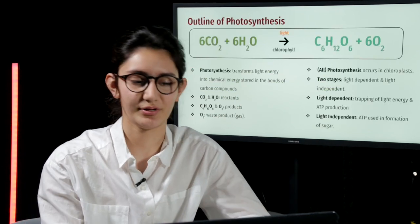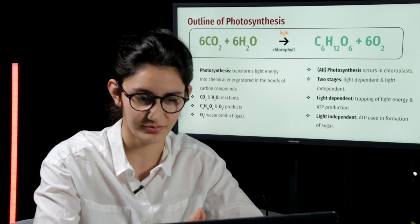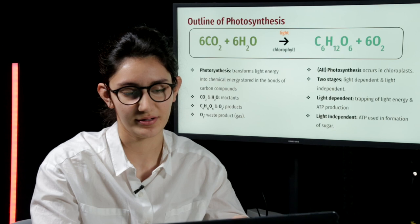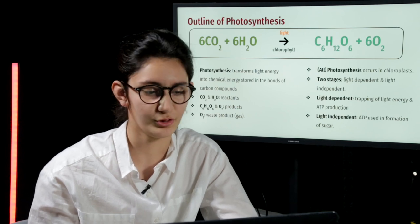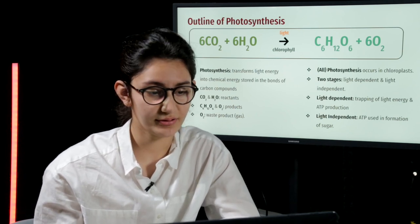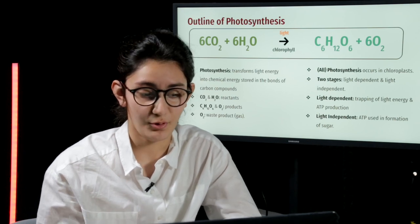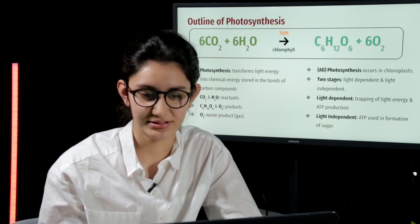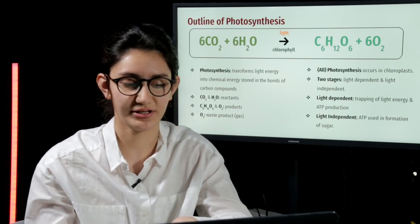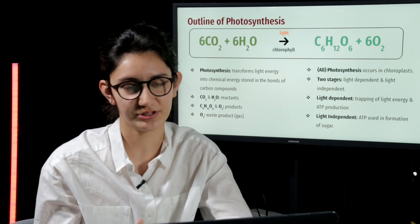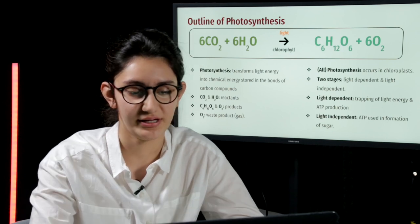To start with, this is the chemical equation for photosynthesis. Six carbon dioxide molecules and six water molecules enter a reaction in the presence of light and the pigment chlorophyll. They produce a sugar, which is mostly glucose, and six oxygen molecules. In this reaction, carbon dioxide and water molecules are reactants, whereas glucose and oxygen are products. From all of these, we can say that photosynthesis transforms light energy into chemical energy that is stored in the bonds of carbon compounds, which is generally glucose.